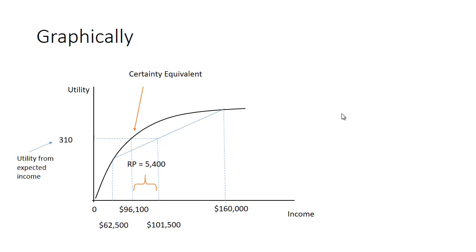If we want to look at it graphically, here's our utility function. At $62,500 is right here, and $160,000 is here. We know that the expected value is $101,500, so we draw up to that average, we draw across. That's 310, which we calculated.